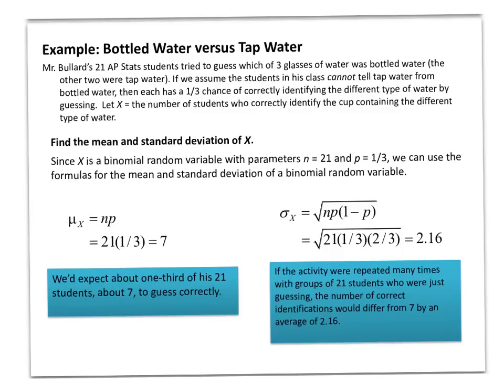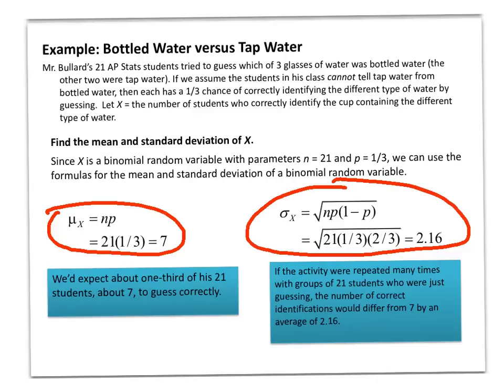Using these formulas is very easy. The mean is 21 times one-third, which equals 7 — we would expect seven students to get it correct. That makes intuitive sense: with a one-third probability and 21 students, seven should be correct. For standard deviation, we take the square root of 21 times one-third times two-thirds, which comes out to 2.16. The standard deviation represents the average error — how far off from the mean we would expect to be on average.